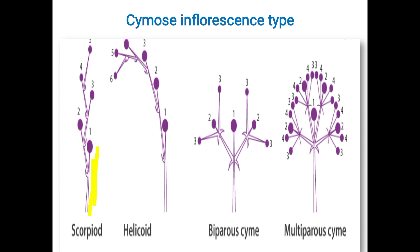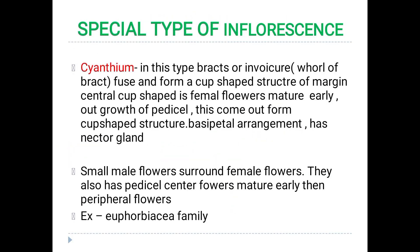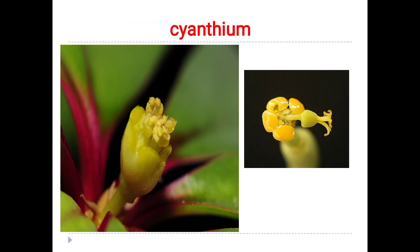Now we have the special types of inflorescence. The first is cyathium, which has a cup-shaped structure of bracts. Female structures mature early and male flowers surround the female flowers. The male flowers also have pedicels. The center female flower matures first and then the peripheral male flowers are present — this was seen in Euphorbia.